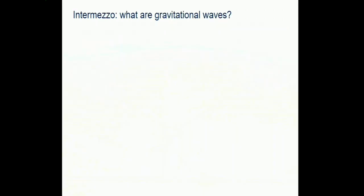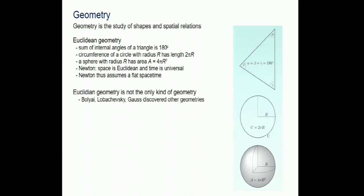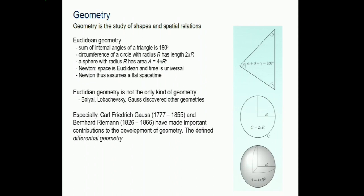An intermezzo to explain what gravitational waves are: it all has to do with the metric tensor and geometry. Geometry is the study of shapes and spatial relations. We all learned Euclidean geometry at school: the sum of angles in a triangle is 180°, a circle with radius r has circumference 2πr, and we can measure the surface of a sphere. But this is not the only geometry. Gauss found others, and Gauss and Riemann created the field of differential geometry.